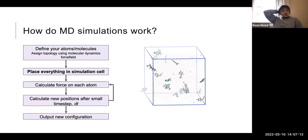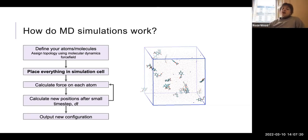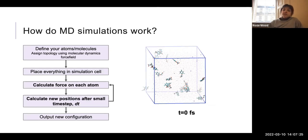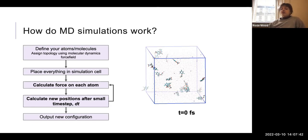The topology file is what a molecular dynamics simulation uses to understand how different molecules interact with one another. I next put all of the molecules that I want to simulate into a box — what we call a simulation cell — which is essentially the starting coordinates for our simulation. We then start by calculating the force on every single atom in our simulation cell, and we can use this force to calculate the acceleration of each atom using F equals MA.